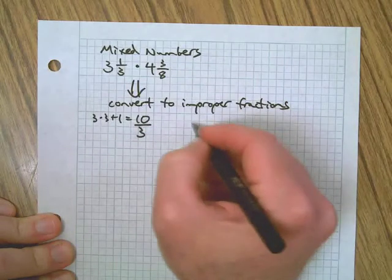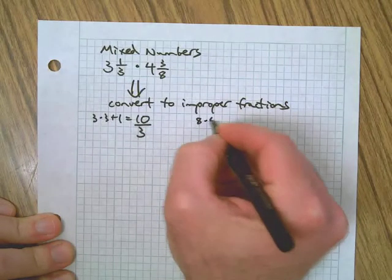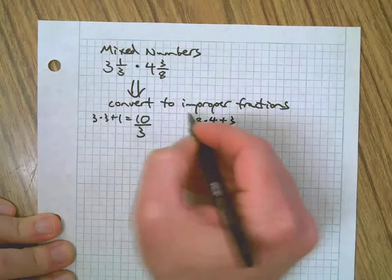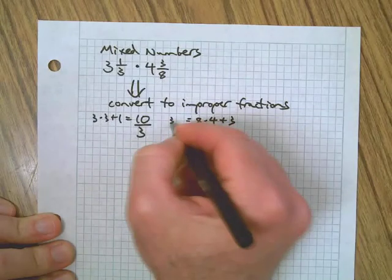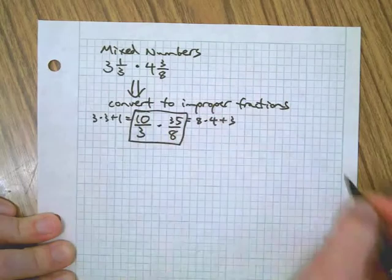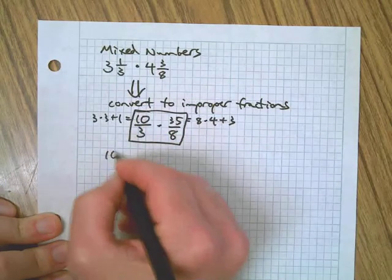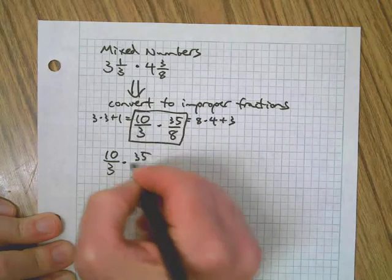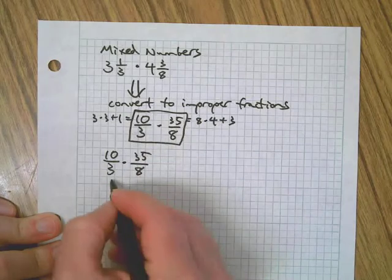So we go three times three plus one equals ten thirds, and we go eight times four plus three equals 35 eighths. So here's our new problem: 10 thirds times 35 eighths. Shortcut.